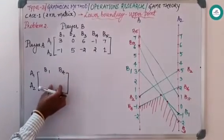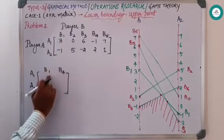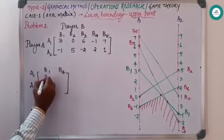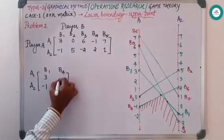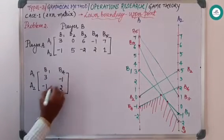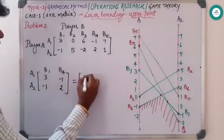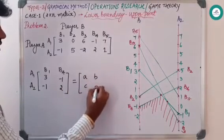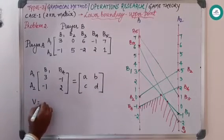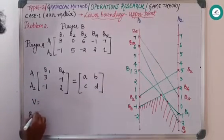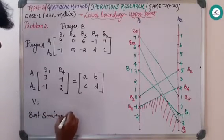Now this particular matrix is reduced to two cross two. So whatever the value we have, B1 and B4, you just copy down. B1 has three and minus one, and B4 has minus one and two. So this you just equate to the two cross two matrix a, b, c, and d. As usual you calculate the value of game and best strategy of Player A and Player B.